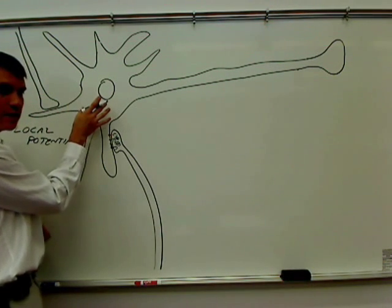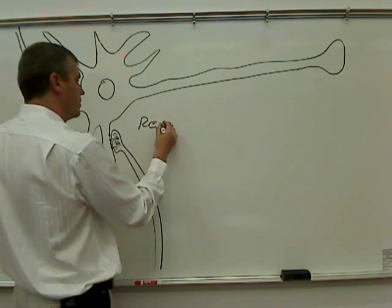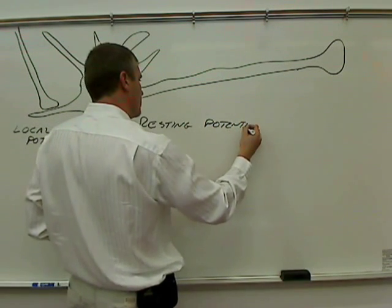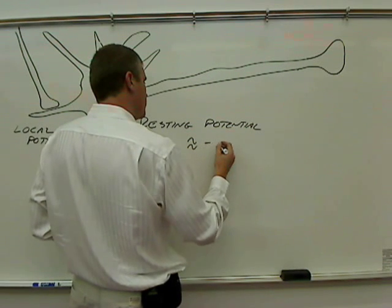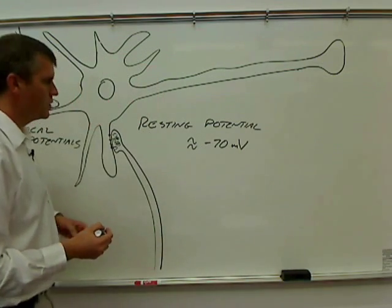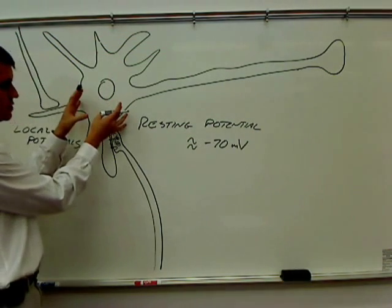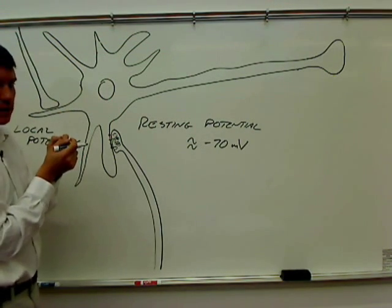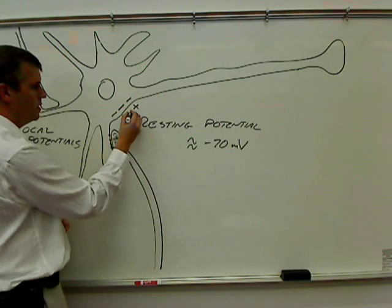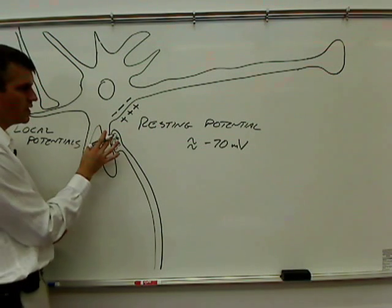The resting potential for this neuron is around minus 70 millivolts. So that means if nothing is contributing to what's happening in this neuron, then its charge will be minus 70 millivolts and that charge again is on the inside. Negative charge on the inside, positive on the outside. That's the resting potential.